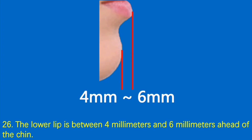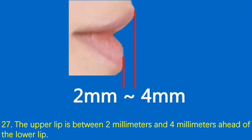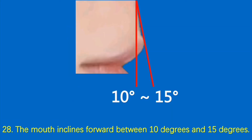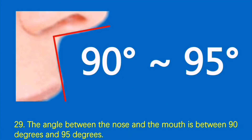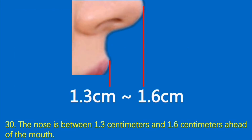26. The lower lip is between 4 mm and 6 mm ahead of the chin. 27. The upper lip is between 2 mm and 4 mm ahead of the lower lip. 28. The mouth inclines forward between 10 degrees and 15 degrees. 29. The angle between the nose and the mouth is between 90 degrees and 95 degrees. 30. The nose is between 1.3 cm and 1.6 cm ahead of the mouth.